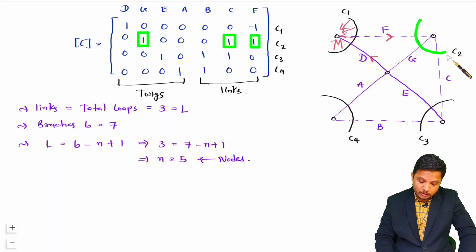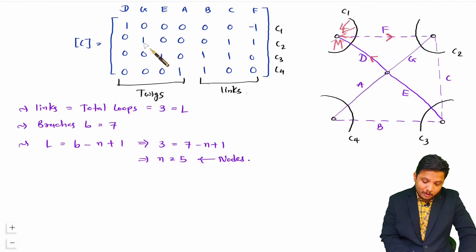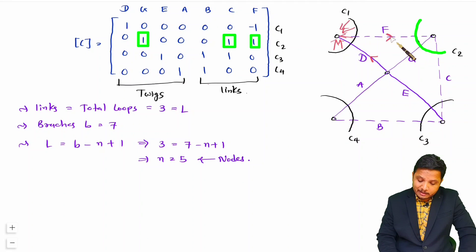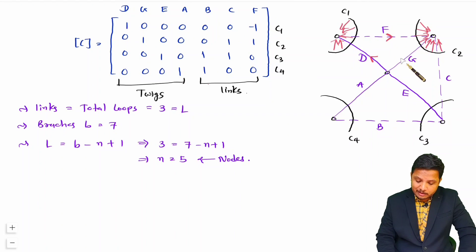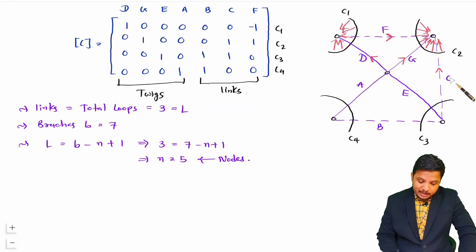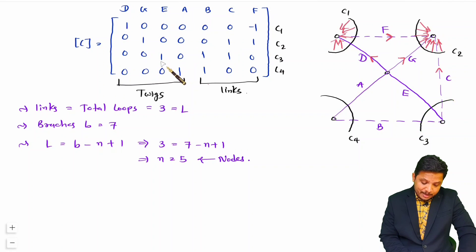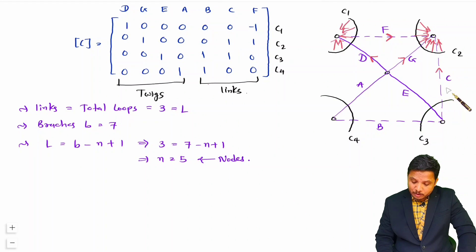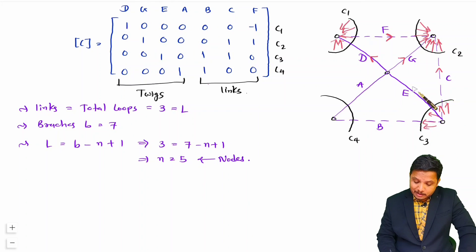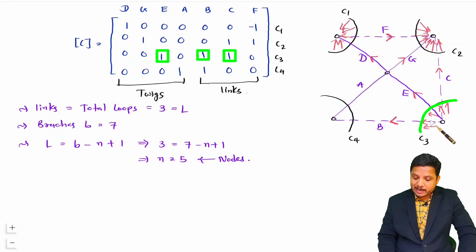Now let us see what is happening with c2. C2 is having f, c, and g — all are plus 1. F is there inside, so cut set direction should be inside. As cut set direction is inside, g should be inside as well as c — that should be inside. Now we have covered f, g, and c with c2. For c3, we have b, c, and e — all are plus. C is plus, meaning cut set c3 is in the direction of c. So e should be in the direction of the cut set and b should also be in the direction of the cut set.